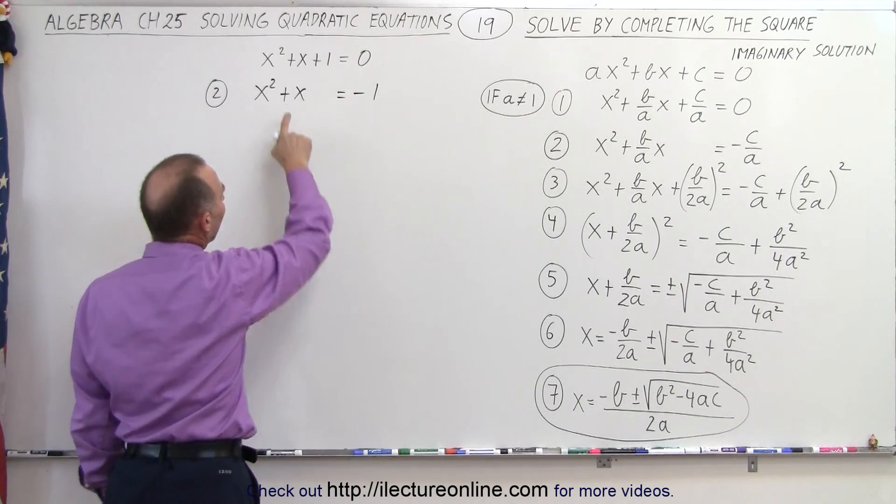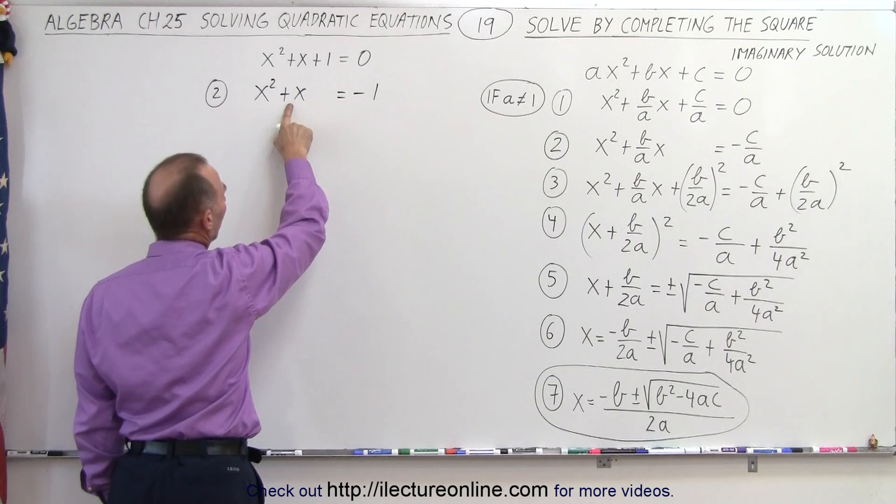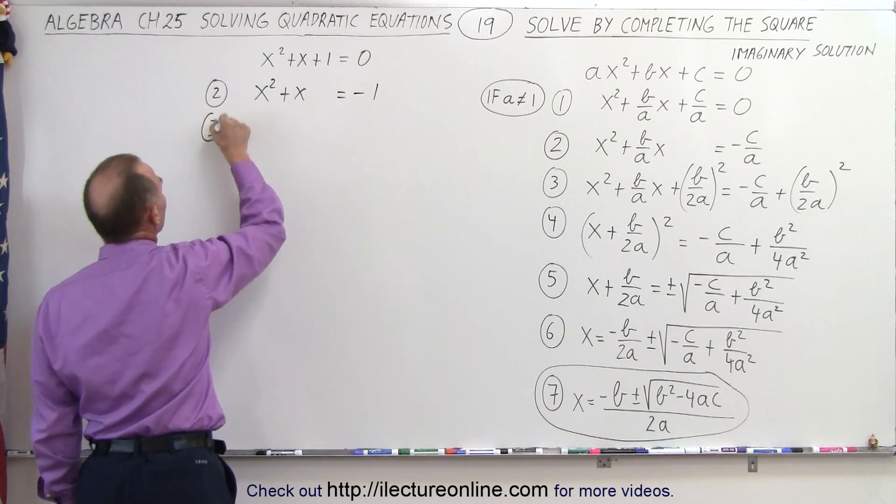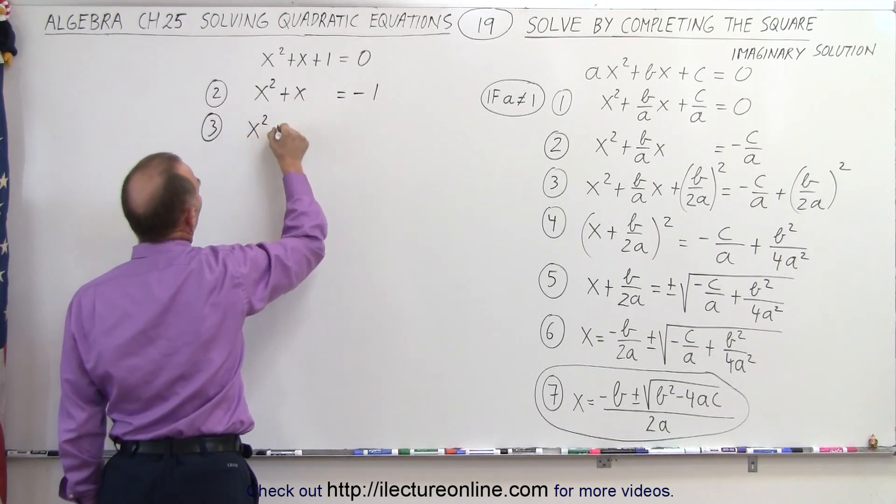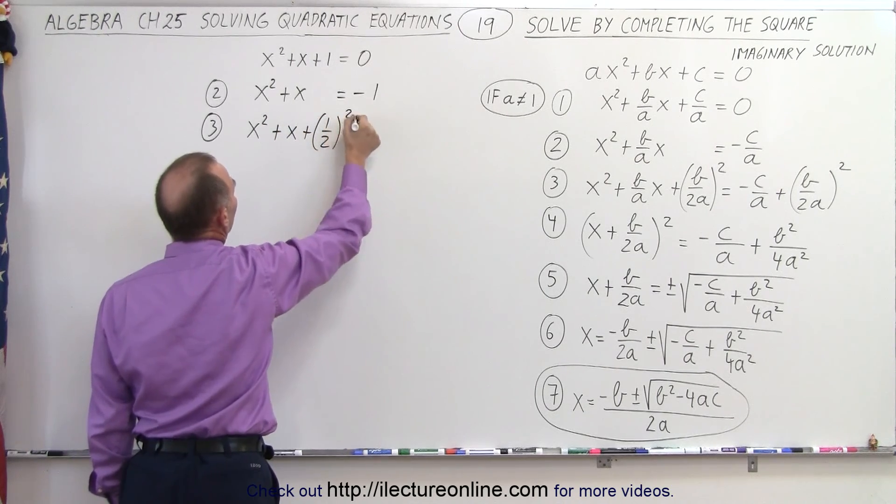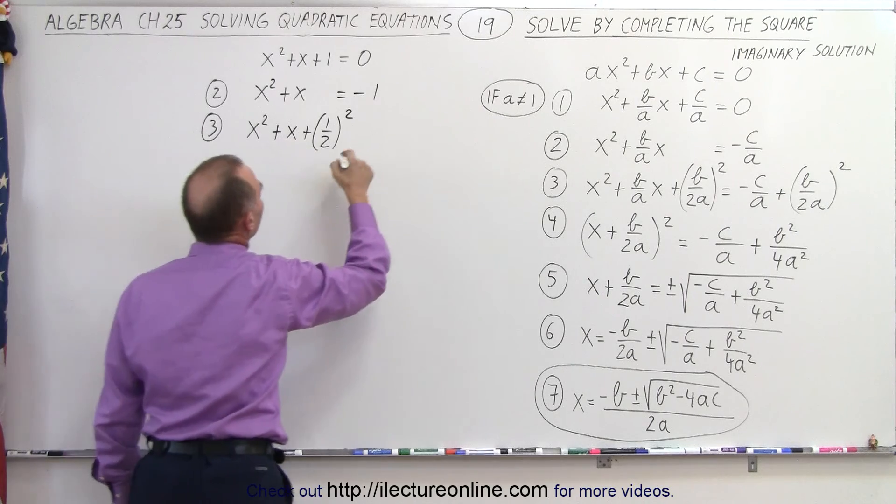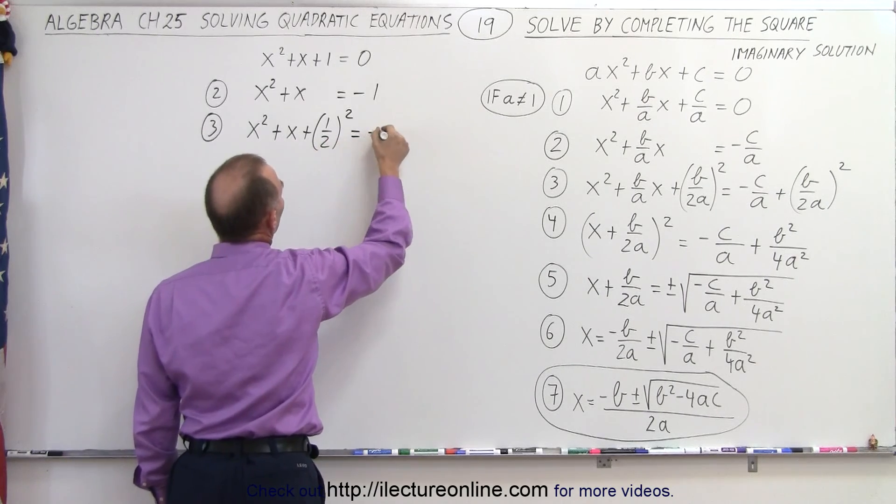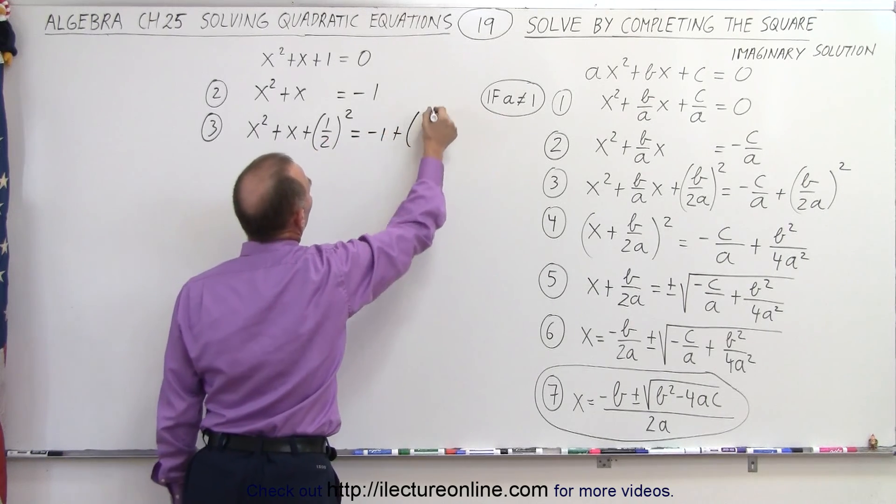Next, we're going to take half the coefficient of the middle term, square it, and add it to both sides. So that's step number 3. We end up with x squared plus x plus 1 half quantity squared, because 1 half is half of 1. And of course, since we add it to the left side, we have to also add it to the right side.